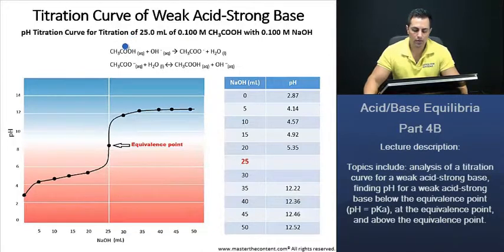Now when you put equal amounts, so at the equivalence point, when we put equal amounts of the acetic acid and equal amounts of volume, the sodium hydroxide, these two are going to virtually go to completion, 100%, and then we're going to end up with this.